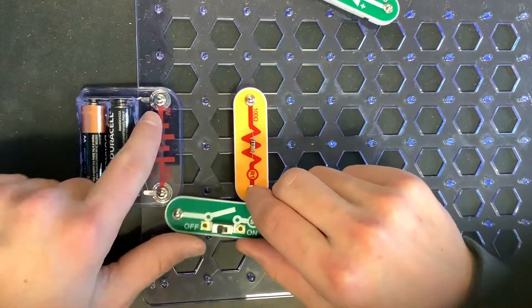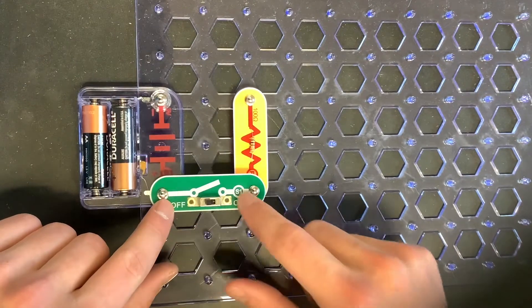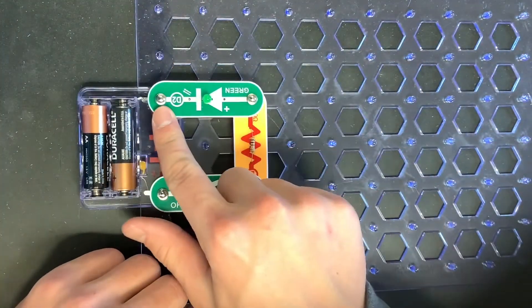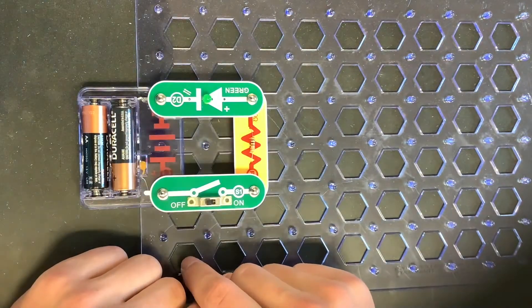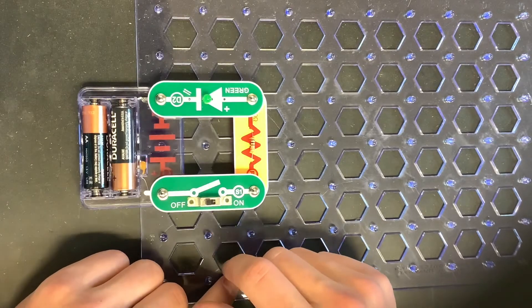So the current flows out of this end. The current keeps flowing through here, through the resistor, and through the LED going that way, which means that the current lines up with what is needed for that LED to turn on.